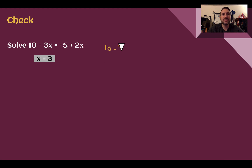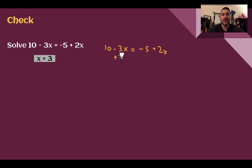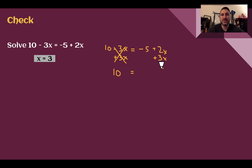Rewriting the equation: 10 minus 3x equals negative 5 plus 2x. I see a variable on both sides, so I need to do the opposite of one of them to both sides. I could subtract 2x or add 3x — adding is generally a little bit easier, so I'm going to add 3x. Negative 3x plus 3x is 0, leaving just 10 on the left. Then 2x plus 3x is 5x, and I still have that minus 5, giving negative 5 plus 5x.